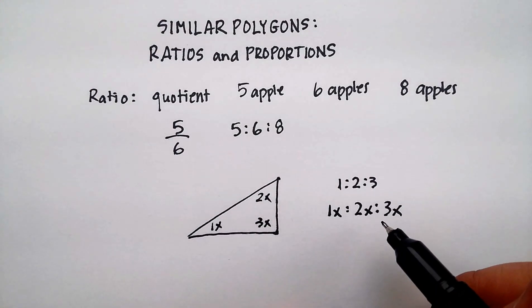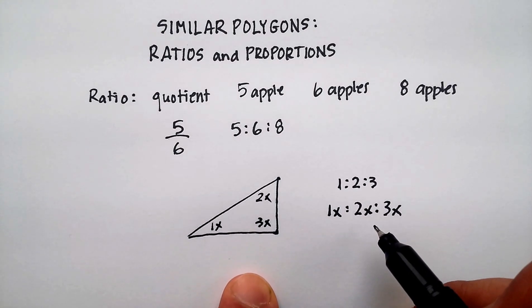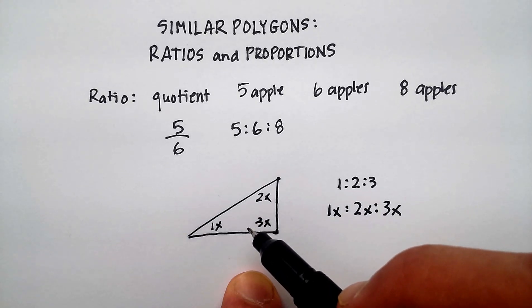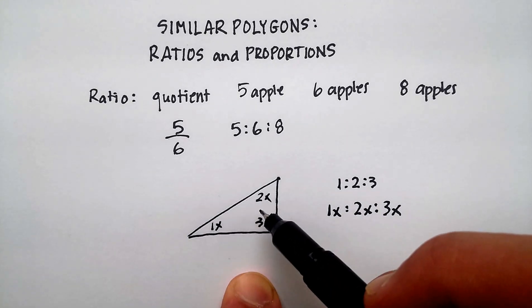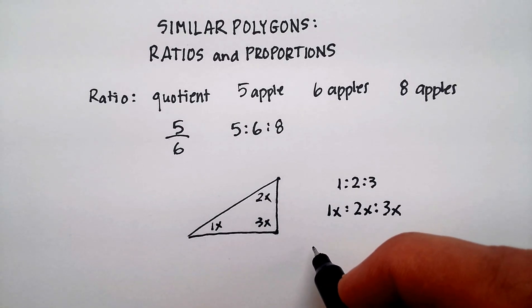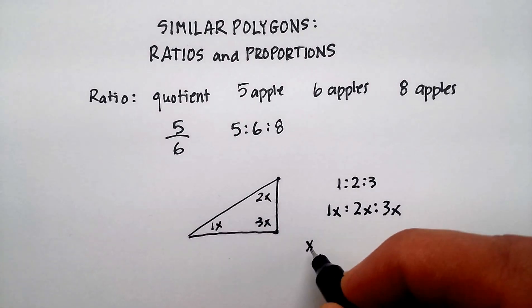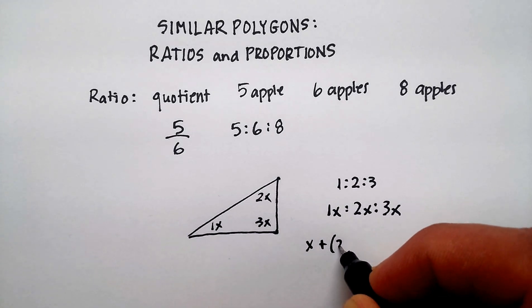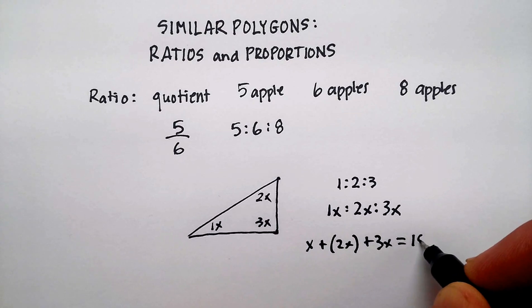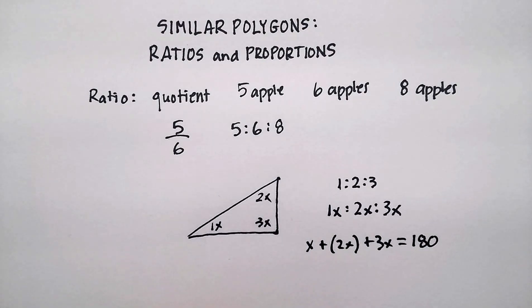Well, now I have a way of combining the information that I knew about triangles, which is the interior angles equal 180 degrees, with what I have here. And I could solve this algebraically. What I can actually end up doing is saying 1x plus 2x plus 3x is equal to 180 degrees.